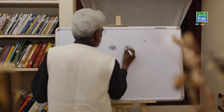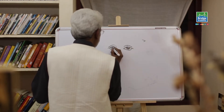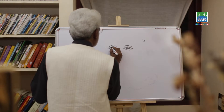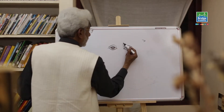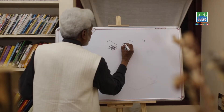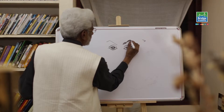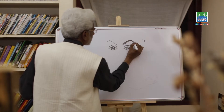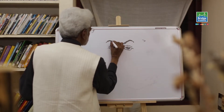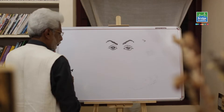Then we draw the pupil, leaving out a little bit of highlight, and darken it. For the eyebrow, like the eye, the inside will be longer and the outside will be shorter. The hair will be going in one direction.